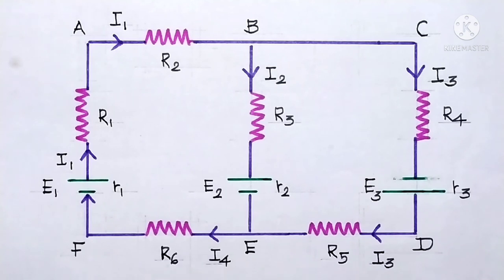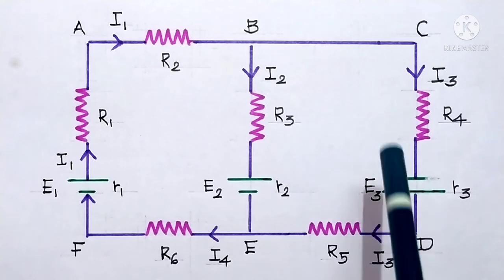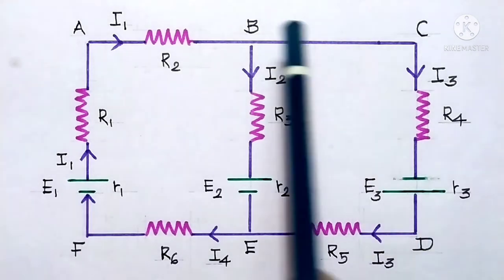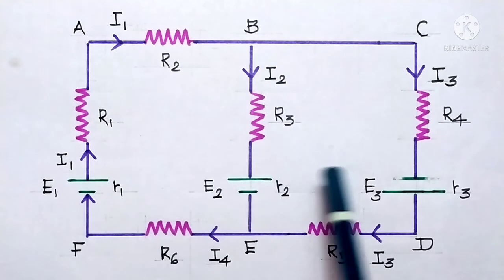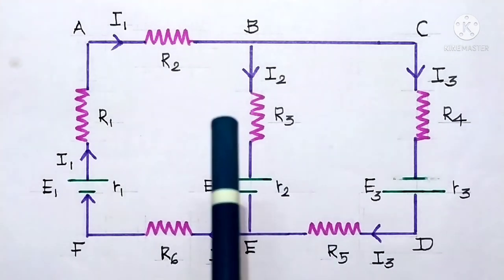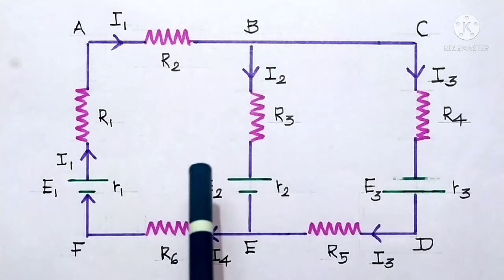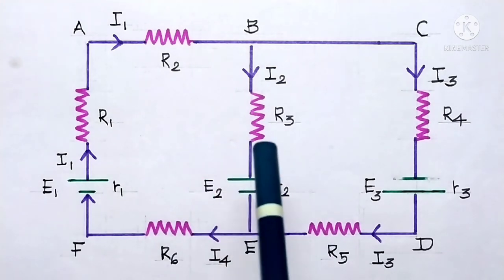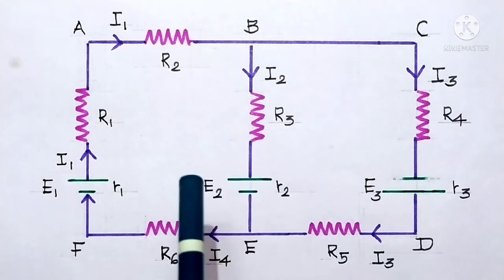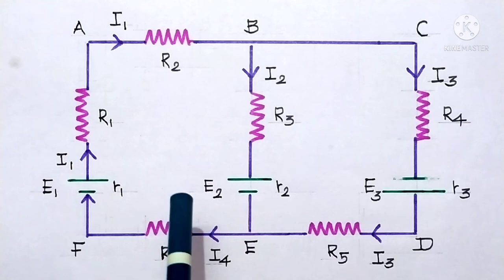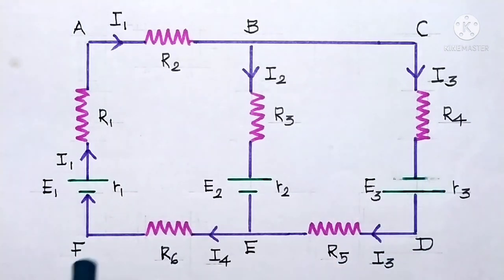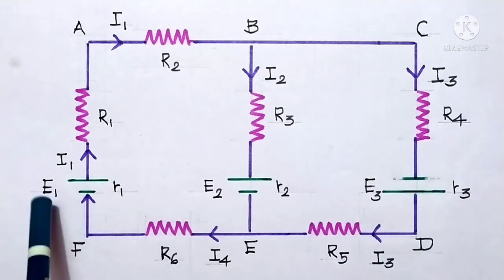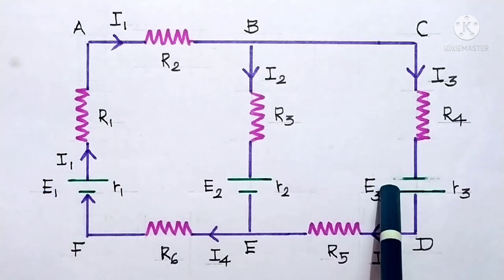We have summed up the products of currents and resistances, and this sum is equal to the sum of the EMFs in the circuit — that is E1 plus E3, as they are both positive.